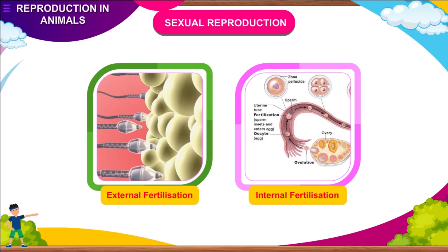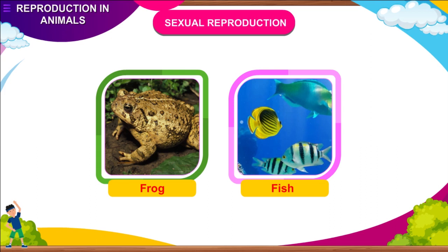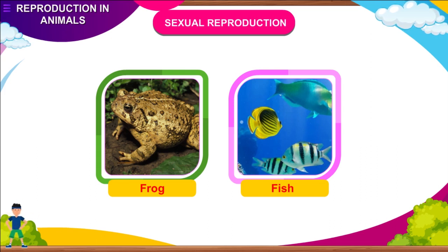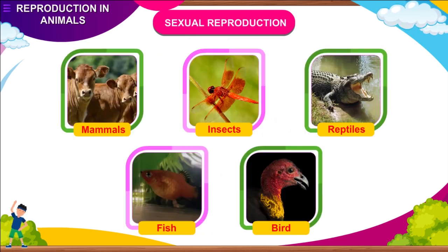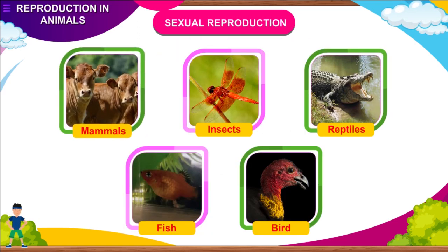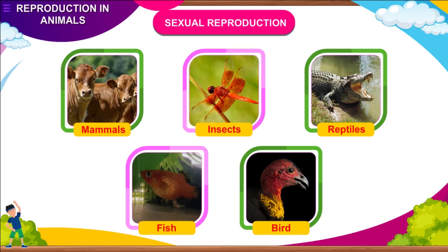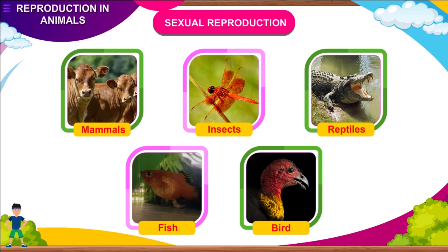External fertilization involves the fusion of male and female gametes outside the body of the female. An example of such fertilization is the one taking place in frog and fish. Internal fertilization takes place inside the body of the female partner. Such fertilization takes place in mammals, insects, reptiles, in some fish and birds.